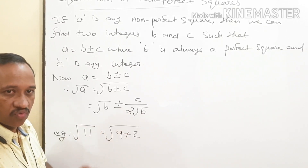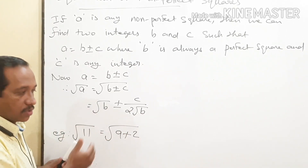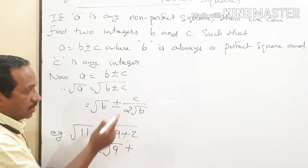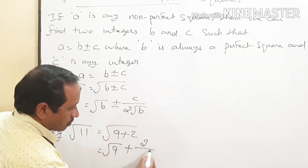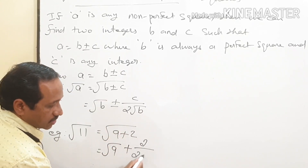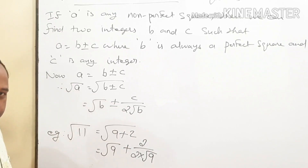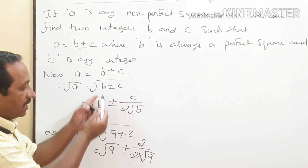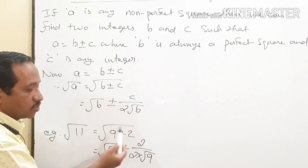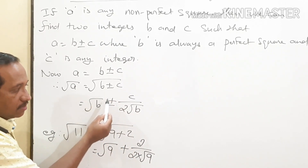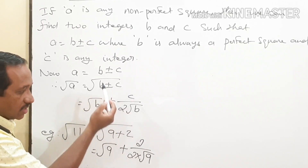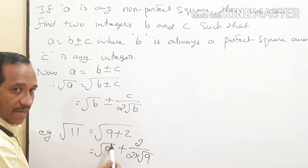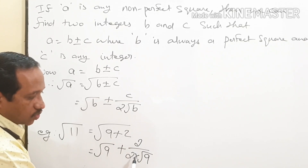So, we are going to apply the formula. The formula is: root of B plus C divided by 2 into root B. Here, root of B means root of 9, plus C means 2, divided by 2 into root B, which is again root 9. Since 11 equals 9 plus 2, the value of B is 9 and the value of C is 2. If we have plus, then we use plus in the formula. So: root of 9 plus 2, divided by 2 into root 9.